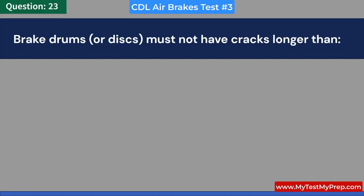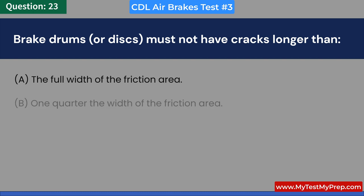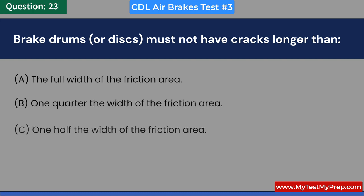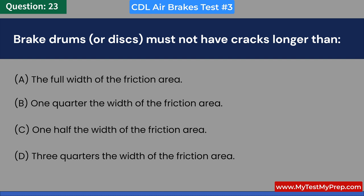Brake drums or discs must not have cracks longer than: A. The full width of the friction area. B. One quarter the width of the friction area. C. One half the width of the friction area. D. Three quarters the width of the friction area. Answer: C. One half the width of the friction area.